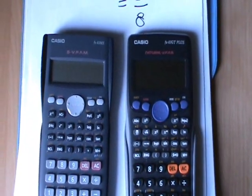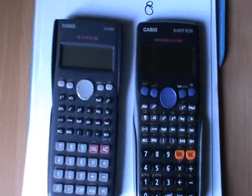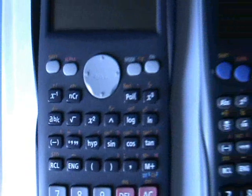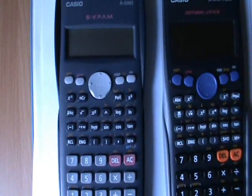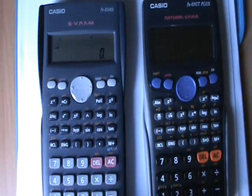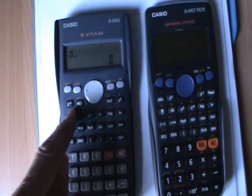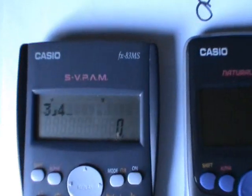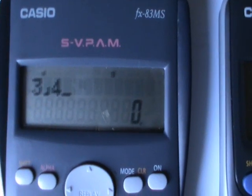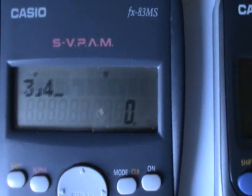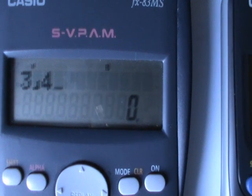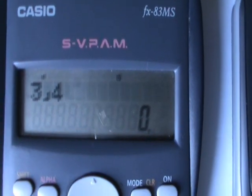So let's try this sum then: 3 quarters take away 1 eighth. To be able to do that on this calculator, we need to use the ABC button. There's the ABC button. That's the fraction button. So to type in 3 quarters, we turn the calculator on, we press 3, ABC, 4. So our display says 3, and there's a backwards L symbol, 4. So that backwards L symbol is the line on the fraction. It separates the 3, which is the numerator, from the 4, which is the denominator.